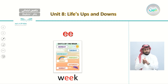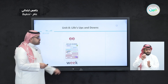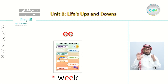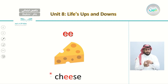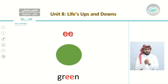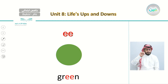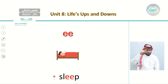Now let's move on to the last set — words that have the EE letters. The first word is weak — say with me, weak. Then cheese — say with me, cheese. Then green — say with me, green. And finally sleep — say with me, sleep.